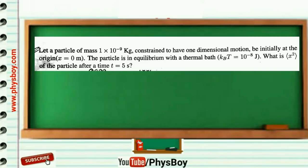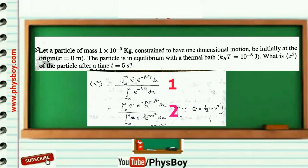The average of x² can be written as the integral from −∞ to ∞ of x² e^(−β ε_i) dx divided by the integral from −∞ to ∞ of e^(−β ε_i) dx, where β = 1/kT and ε_i is the energy equal to ½mv². If you put energy ε_i = ½mv² in the first line, then put v = x/t, you will get the next line.